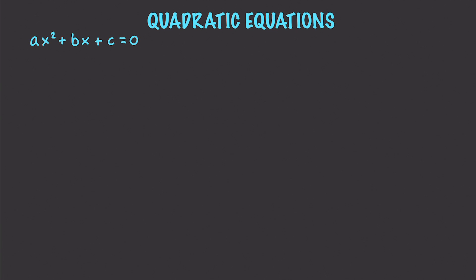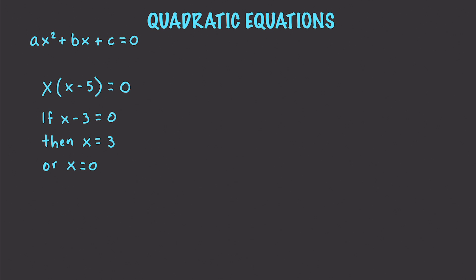Let's say you want to solve one by factoring. For example, let's say you have x times (x minus 5) which would be equal to zero. We know that if x minus 3 equals zero then x would be equal to 3, or x would be equal to zero, based on something called the zero product property. The zero product property states that a product can only equal zero if at least one factor equals zero — common sense.